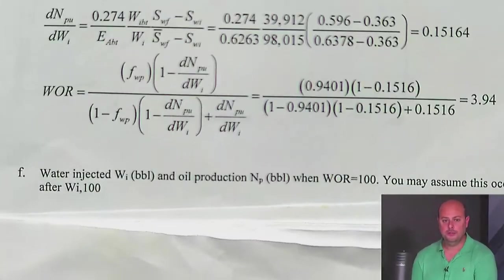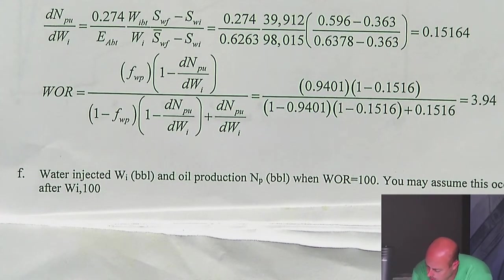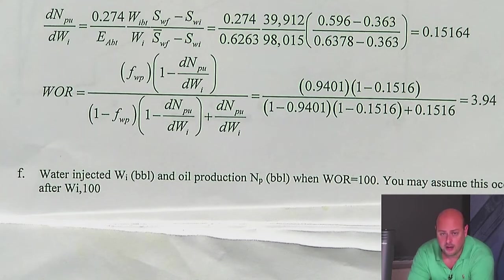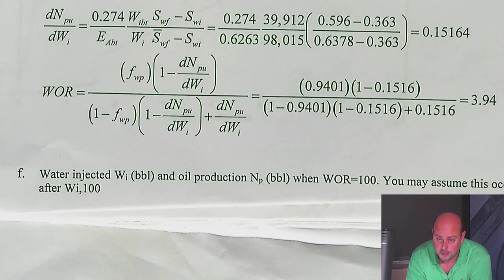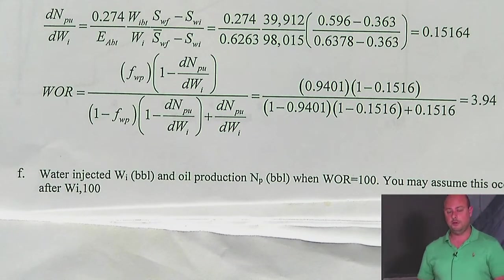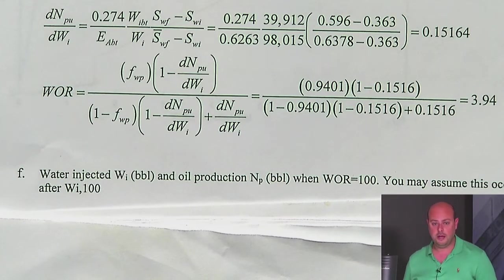The last example asks: how much water have we injected and how much oil have we produced once we reach a water-oil ratio of 100? That means 100 barrels of water for every barrel of oil produced — probably a good time to think about abandoning the reservoir, drilling new wells, converting producer and injector wells, or pursuing enhanced oil recovery. You'll have to do the economics on that, which is a class you'll take next year.